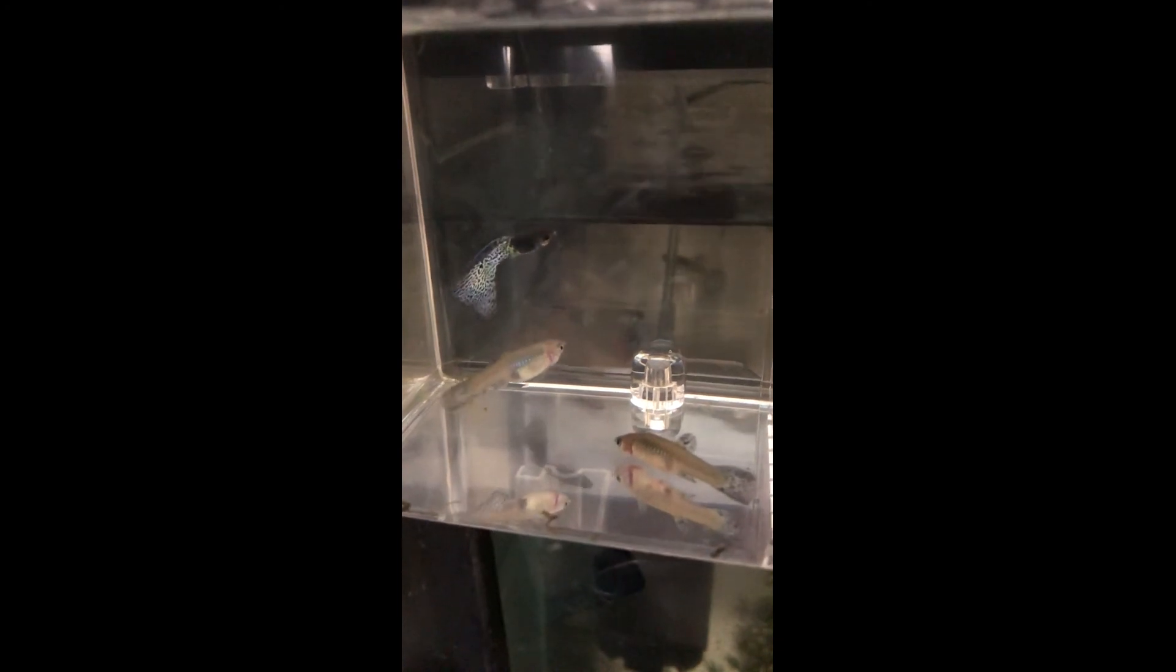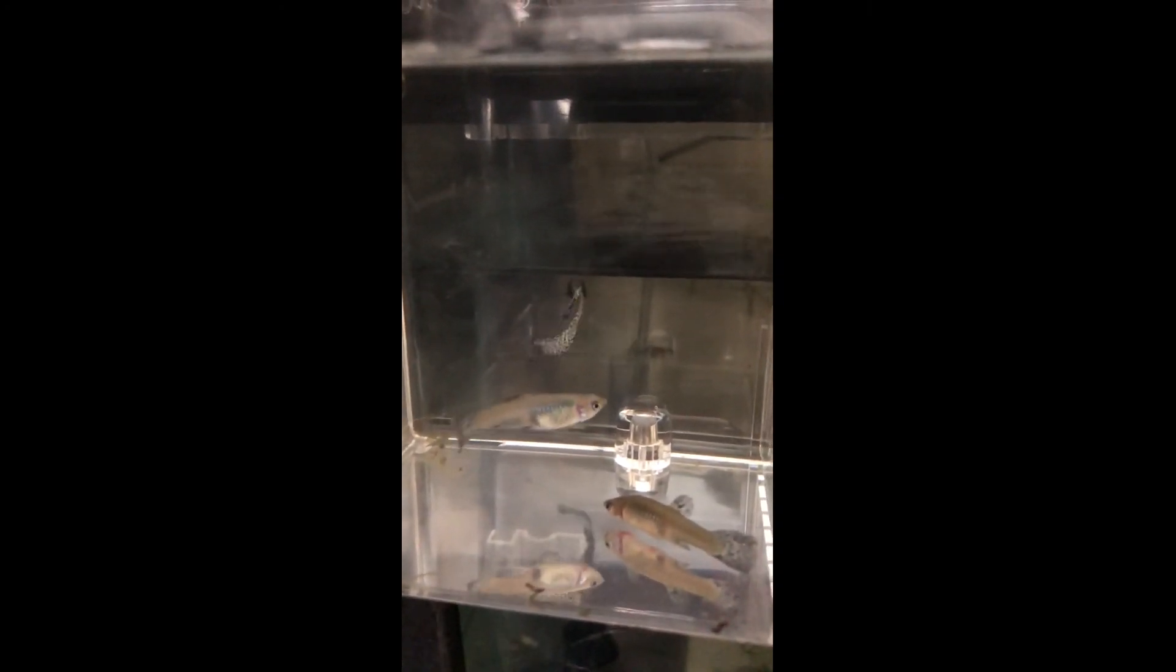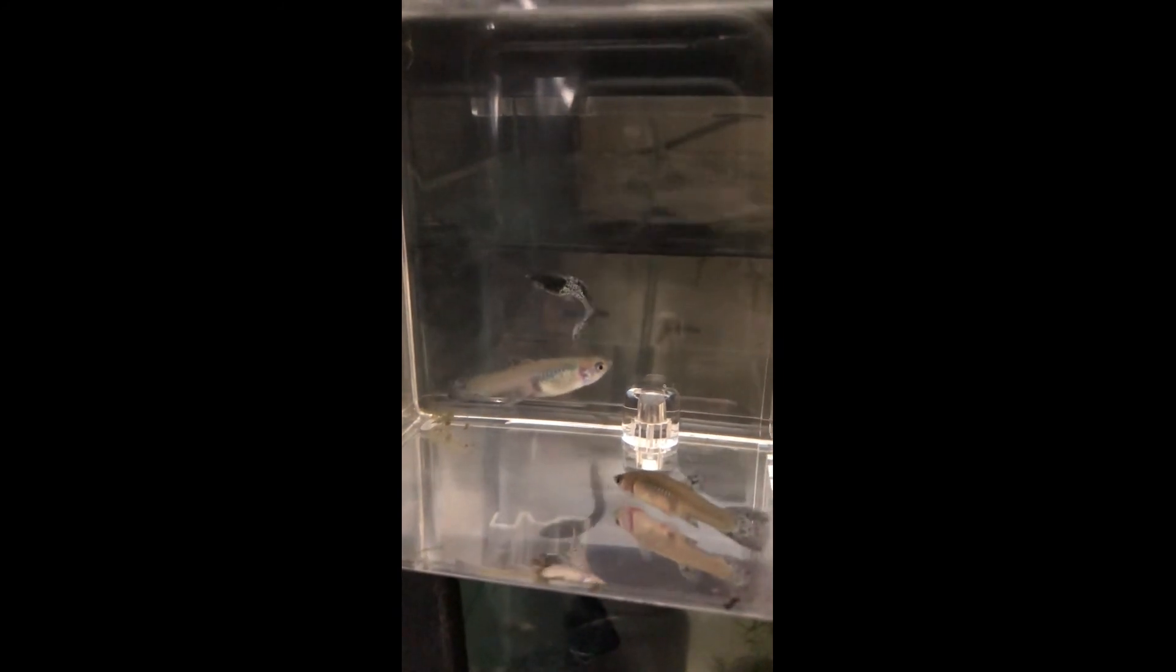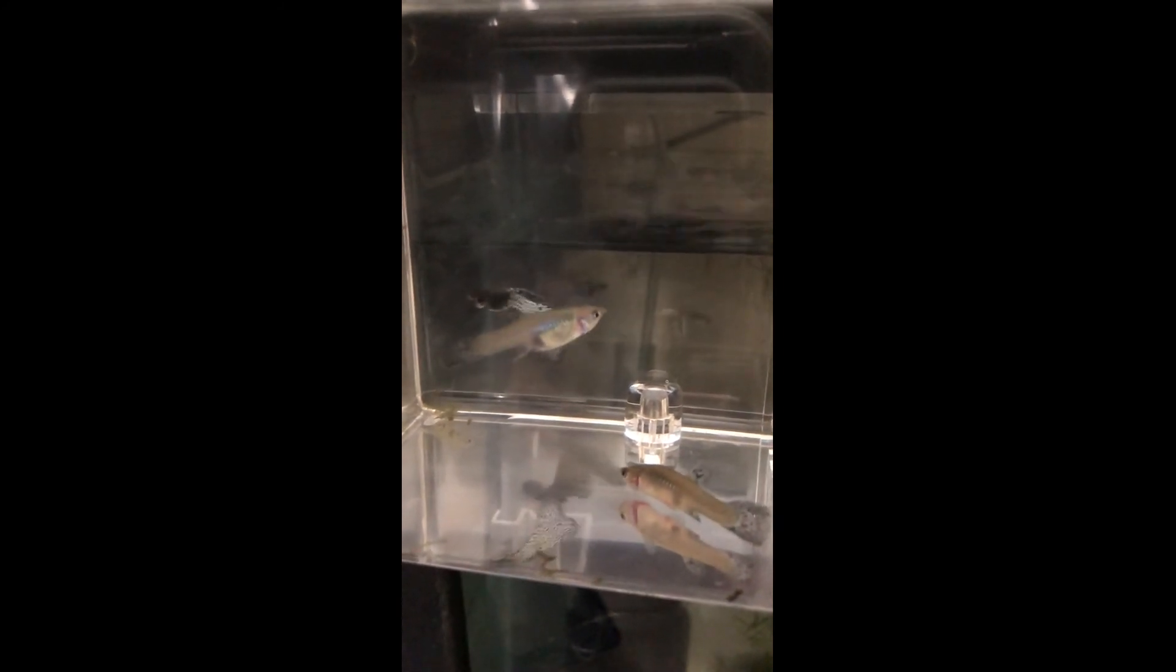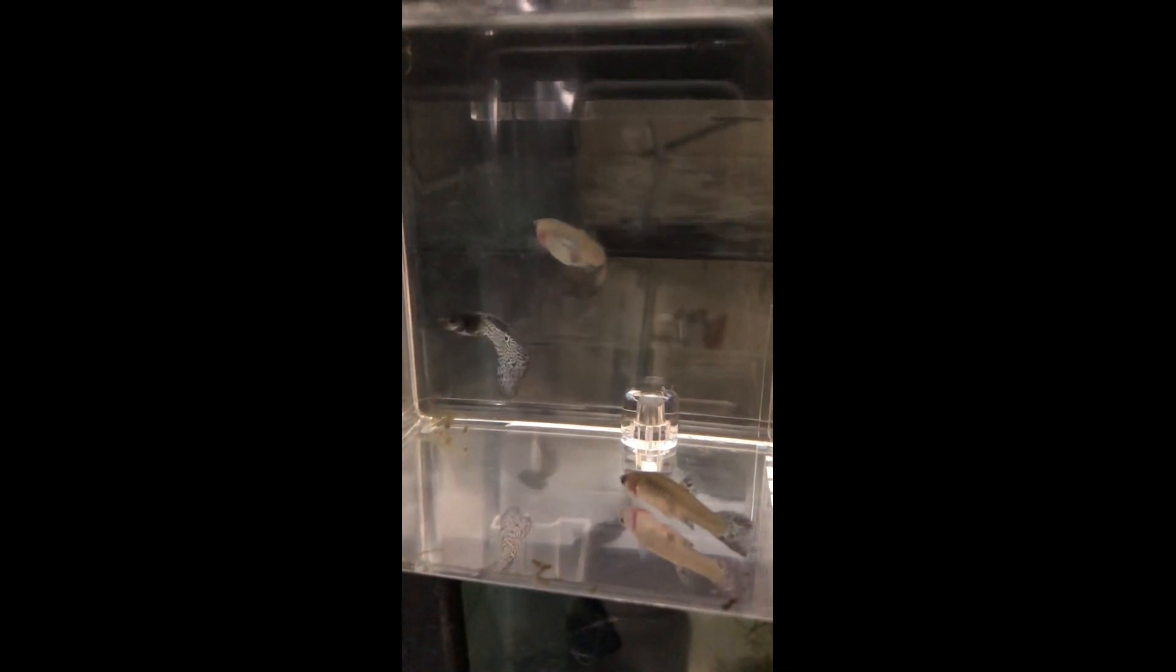Alright so here are some signs. We have the male is body wagging with white cotton in the mouth. Female below him is body wagging with clamped fins and the female on the bottom is wasting or thinning and not really moving around. These were all standard signs.